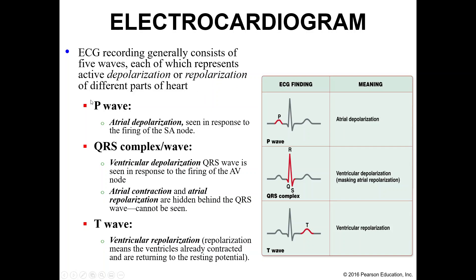The P wave is our first wave — atrial depolarization. We have fired our SA node, it has spread throughout the atria, and we get atrial depolarization. We are depolarizing our atria.